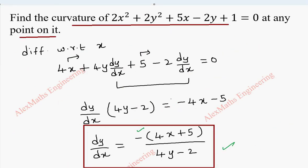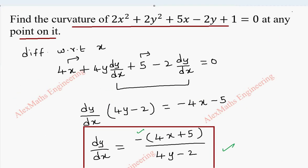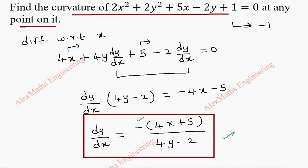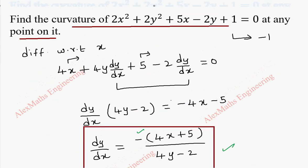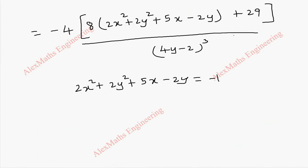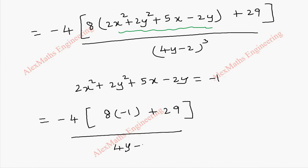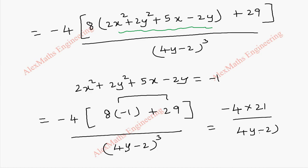Let's check the expression: 2x² plus 2y² plus 5x minus 2y. Now from the original equation, if I take the constant 1 to the other side, we get 2x² plus 2y² plus 5x minus 2y equals minus 1. So this entire expression can be replaced with minus 1. Therefore d²y/dx² becomes minus 4 into 8 into minus 1 plus 29, divided by (4y minus 2) whole cube. That gives minus 4 into 21 divided by (4y minus 2) whole cube.